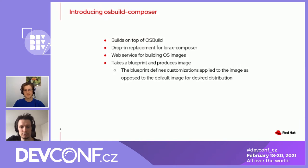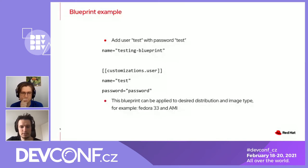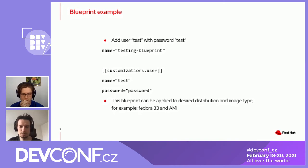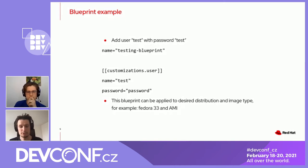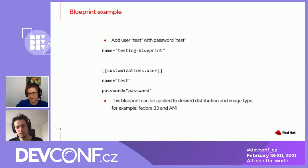You can see an example of such a customization here. We call it a blueprint, and it is a simple TOML file. In this blueprint, you can specify, for example, a new user that should be present in the system, a package that should be installed, or a systemd service that should be enabled. When you have the blueprint, you can apply it to a distribution and image type — for example, if you want to create a Fedora 33 image for AWS, you would select the distribution, the image type, and then apply the blueprint.